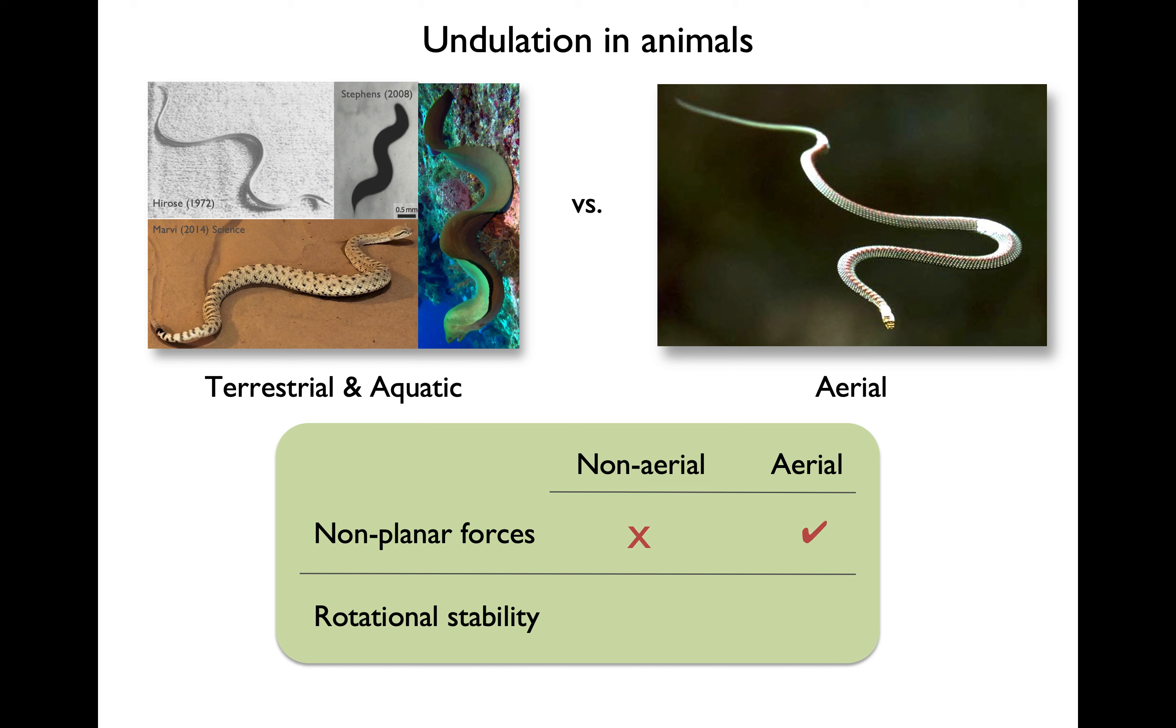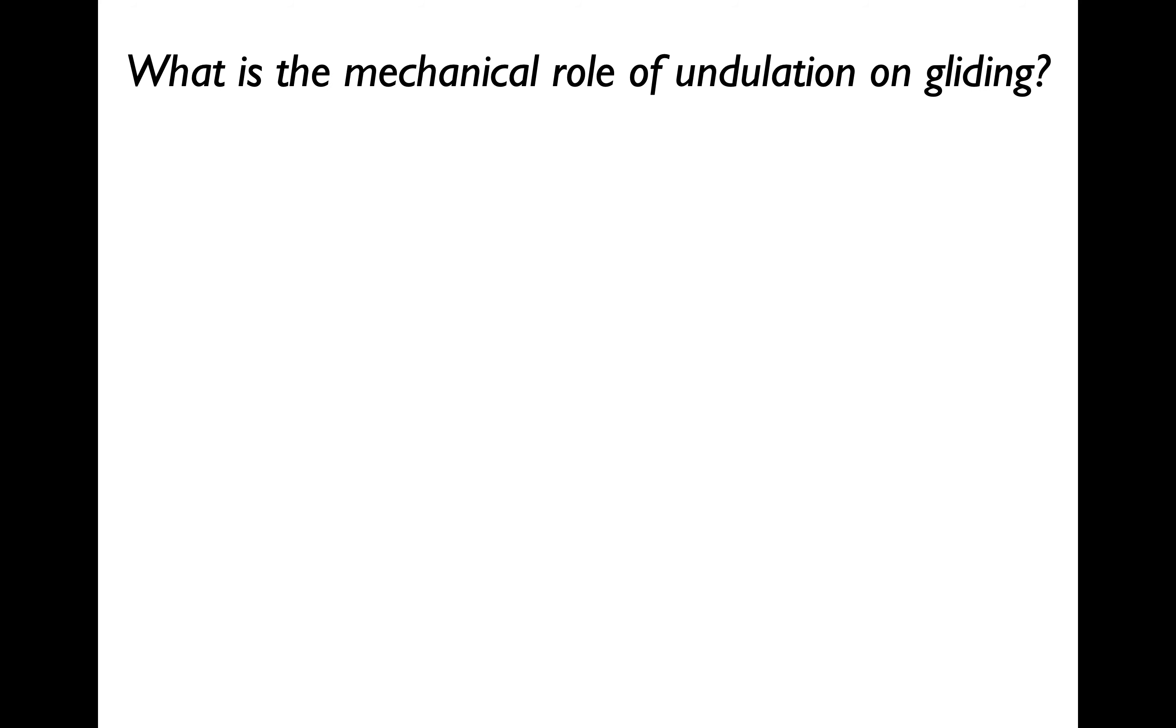Two key ways are force production and stability. First, the snake must produce out-of-plane lift and drag forces to offset its weight. Next, because the snake is in air, it has to contend with rotational stability in all three rotational degrees of freedom. We're going to focus on the question of what is the mechanical role of undulation on glide dynamics?